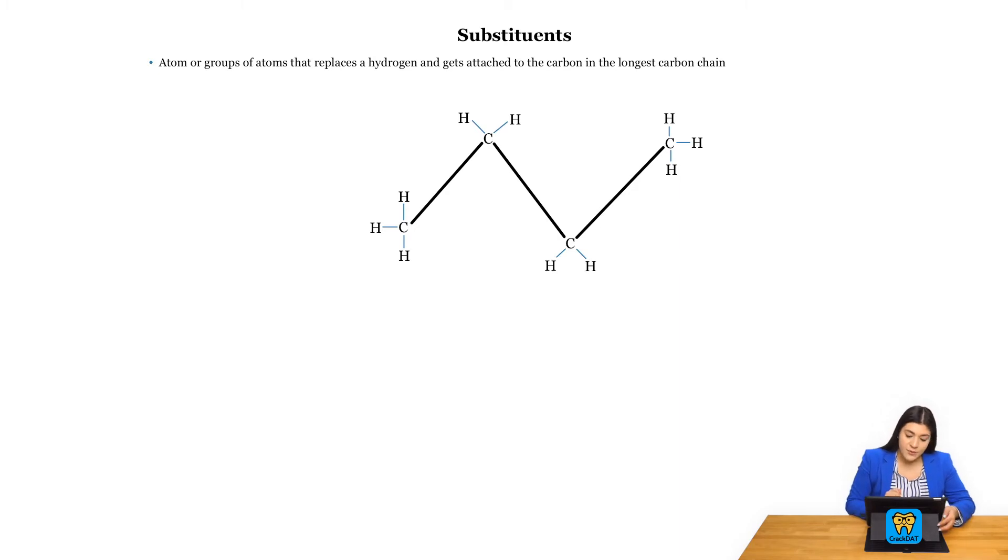So for example, here we see we're actually showing all the different hydrogens that are attached to each carbon in the carbon chain. This would be represented as our longest carbon chain.